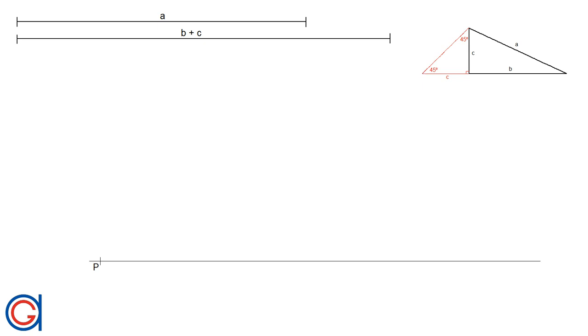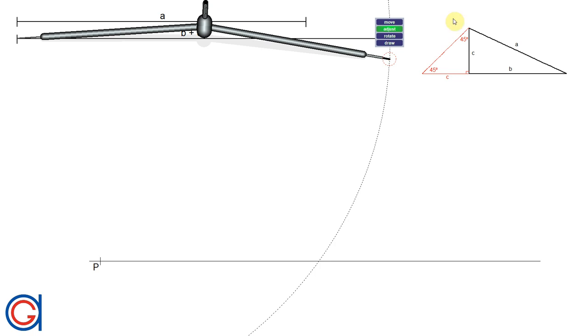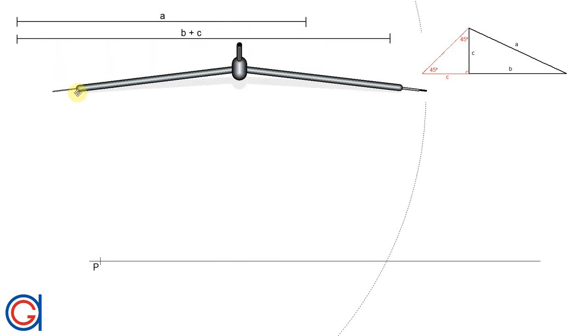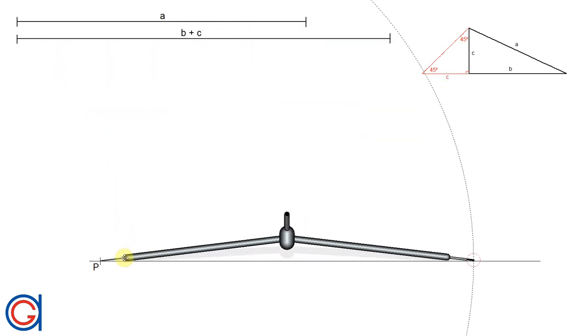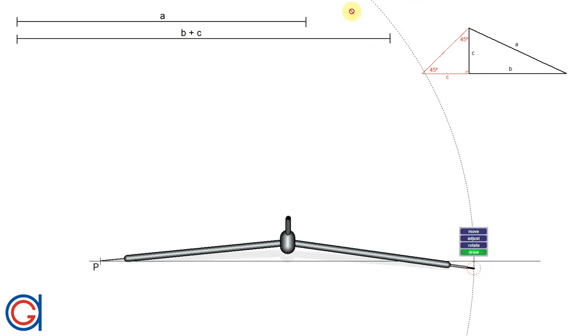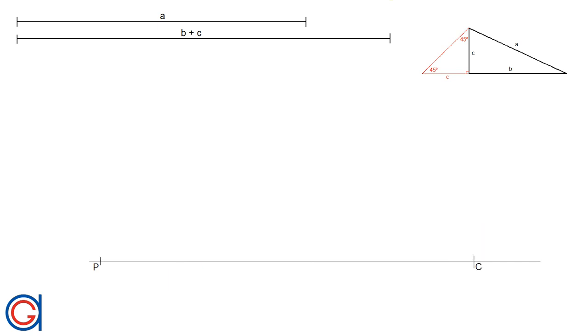Okay, so now the next step, setting our compass to the length of the sum of the two sides B plus C which we are given, we're going to transport this length onto the horizontal line. So setting our compass to this length and setting it on point P, we're going to describe an arc on the horizontal line which will give us a new point which we call C.